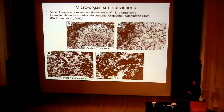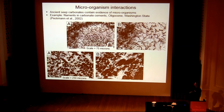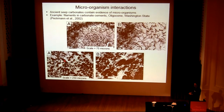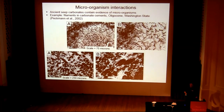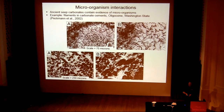In ancient seep communities, we can find examples of microbial microfossils. Here we have an example from an Oligocene site in Washington State — thin sections of authigenic carbonate minerals, in this case aragonite. There are two different morphologies of filaments: some small skinny ones a few microns in diameter and several hundred microns in length, and much larger ones a couple of hundred microns in diameter and millimetres in length, some with sheaths — potentially equivalent to the giant sulphide-oxidising bacteria found at modern seeps. However, it's very difficult to assign taxonomy and physiology to filamentous microfossils, so we don't really know what these things were doing.